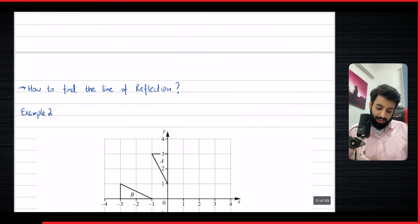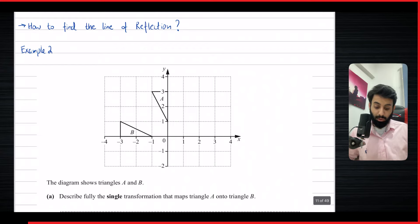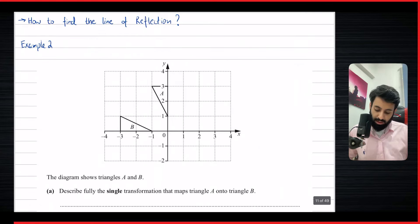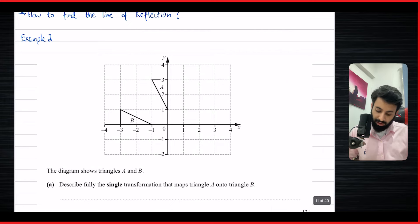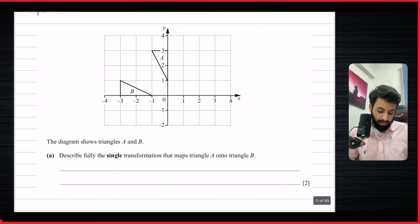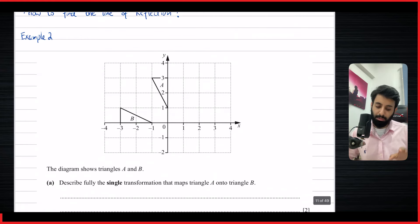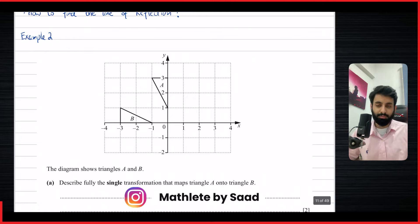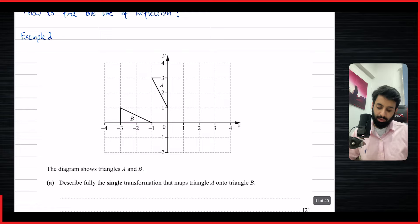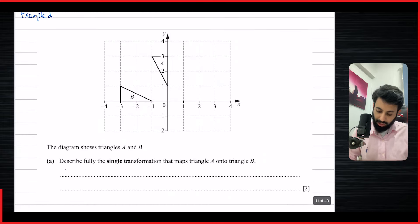Now, let's do another example. In this example, things are going to become a whole lot easier. It says here, the diagram shows triangles A and B. Describe fully the single transformation that maps triangle A onto triangle B. This is a question that I've taken from past papers. In this, you have to do the whole thing. That means you have to write down whatever transformation it is. Since we're only doing reflection, obviously, it's only going to be reflection. The reason why it's two marks is because you get one mark for stating the transformation. The next mark you get is by finding out the line of reflection.